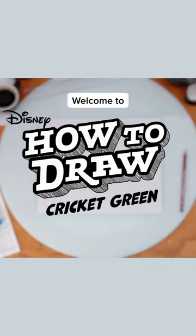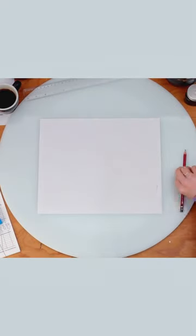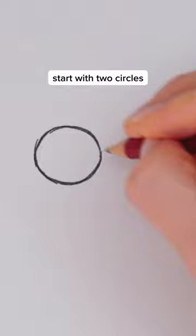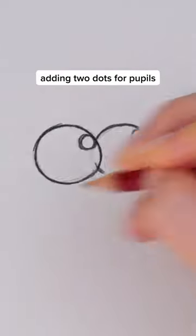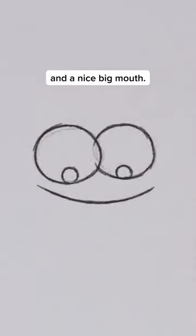Welcome to How to Draw Cricket Green. To draw Cricket, start with two circles for his eyes, adding two dots for pupils, and a nice big mouth.